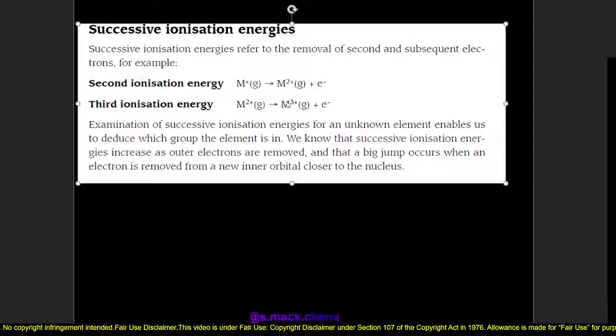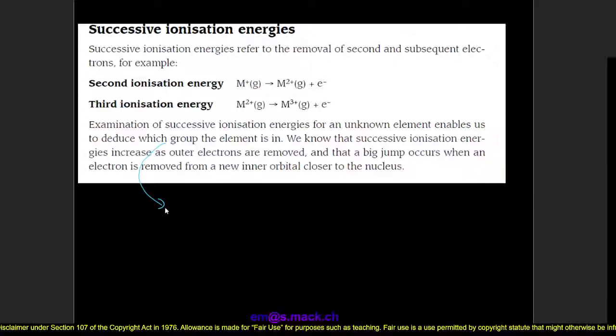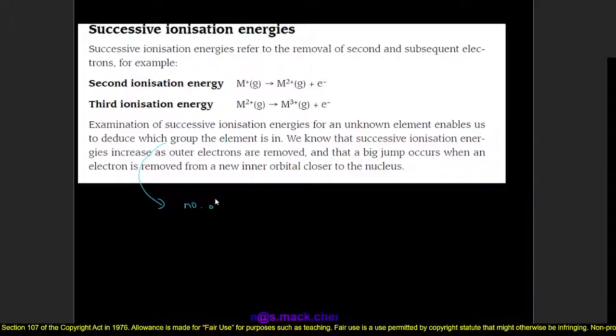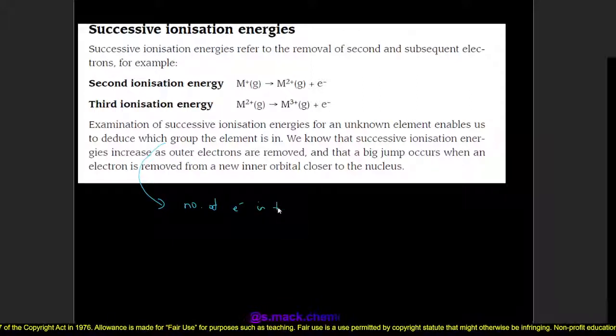This data, these successive ionization energies, we can examine. Let's say it's for an unknown element. We can use this data to help us deduce which group the element is in. To deduce the group the element is in, we do so by determining the number of electrons in the valence shell of the atom.